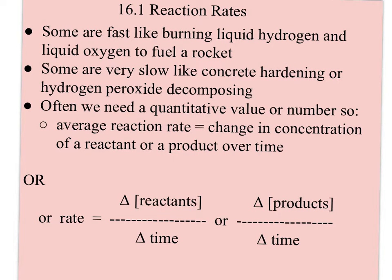Remember, a reaction occurs because reactant particles collide and they make product. Some reaction rates are naturally fast, like burning liquid hydrogen and liquid oxygen to fuel a rocket. Some are really slow, like concrete hardening or hydrogen peroxide decomposing. Sometimes we deliberately speed up reactions, and other times we deliberately slow down reactions.